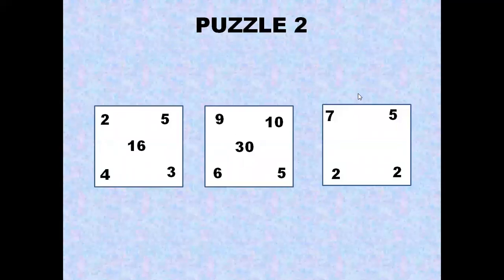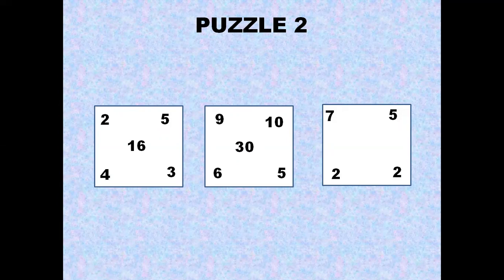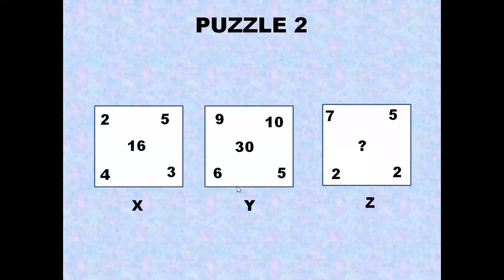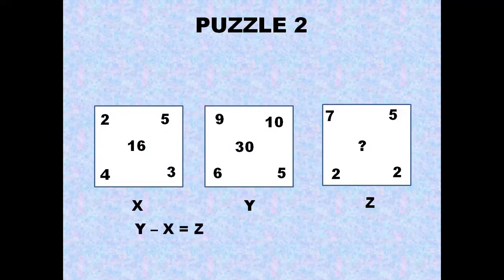Moving on to Puzzle 2. Here we have three squares and we have to find out the middle number in the third square. I will give you some hints. Let us consider the first square as x, second square as y, third square as z.